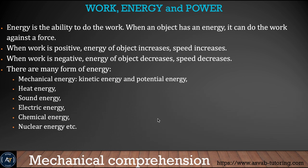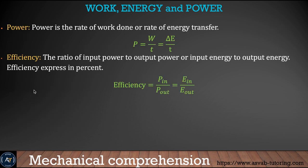Energy is the ability to do work — if you don't have energy you cannot do anything. There are many forms of energy: mechanical energy (which includes kinetic energy and potential energy), heat energy, sound energy, electric energy, chemical energy, and nuclear energy. Power is the rate of work done, or rate of energy transfer — power equals work done per unit time. Efficiency refers to how efficiently certain work is done, expressed as power out divided by power in, or energy out divided by energy in.